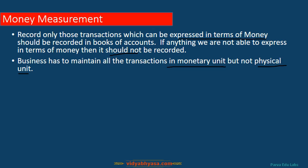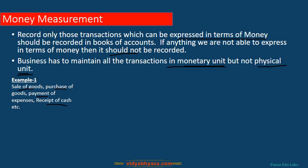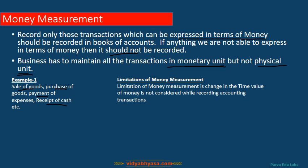For example, in India all transactions are maintained in rupees, and in the US all transactions are maintained in dollars — not in physical units. The number of quantities purchased need not be maintained in accounts from a core accounting perspective; all transactions should be maintained in monetary units. Examples of the money measurement concept include sale of goods, purchase of goods, payment of expenses, and receipts of cash.